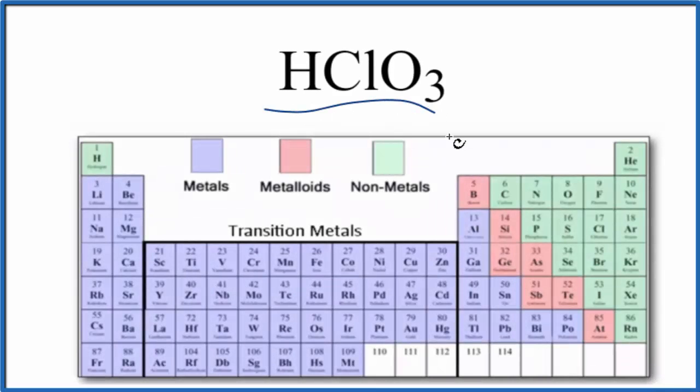The question is whether HClO3, chloric acid, is ionic or covalent.